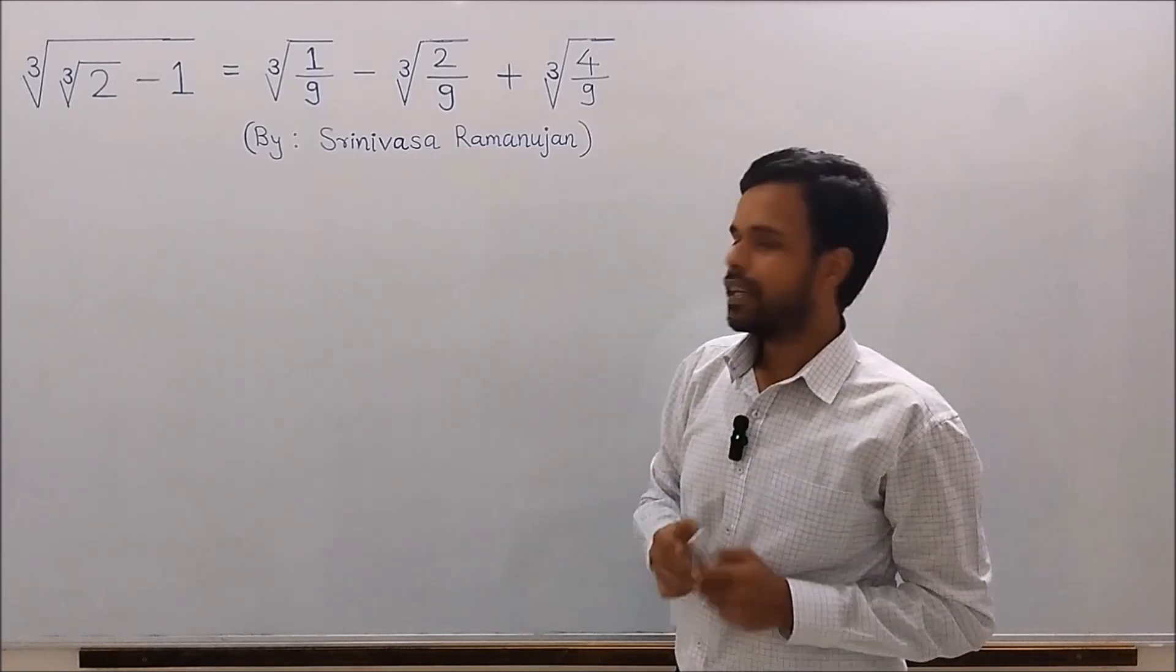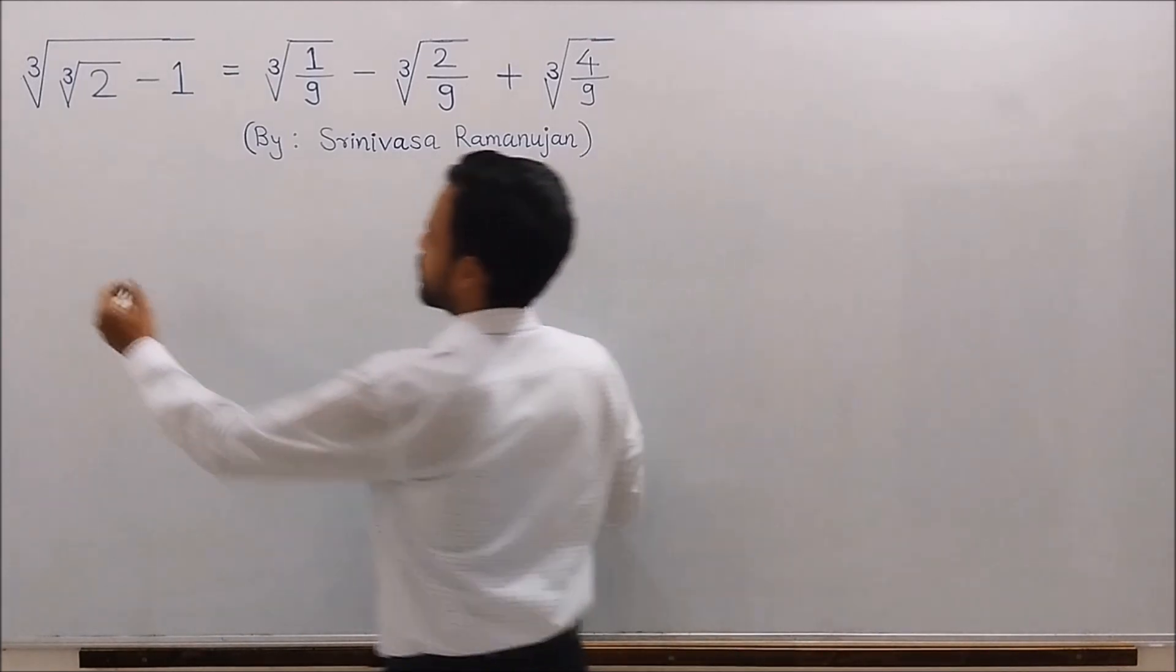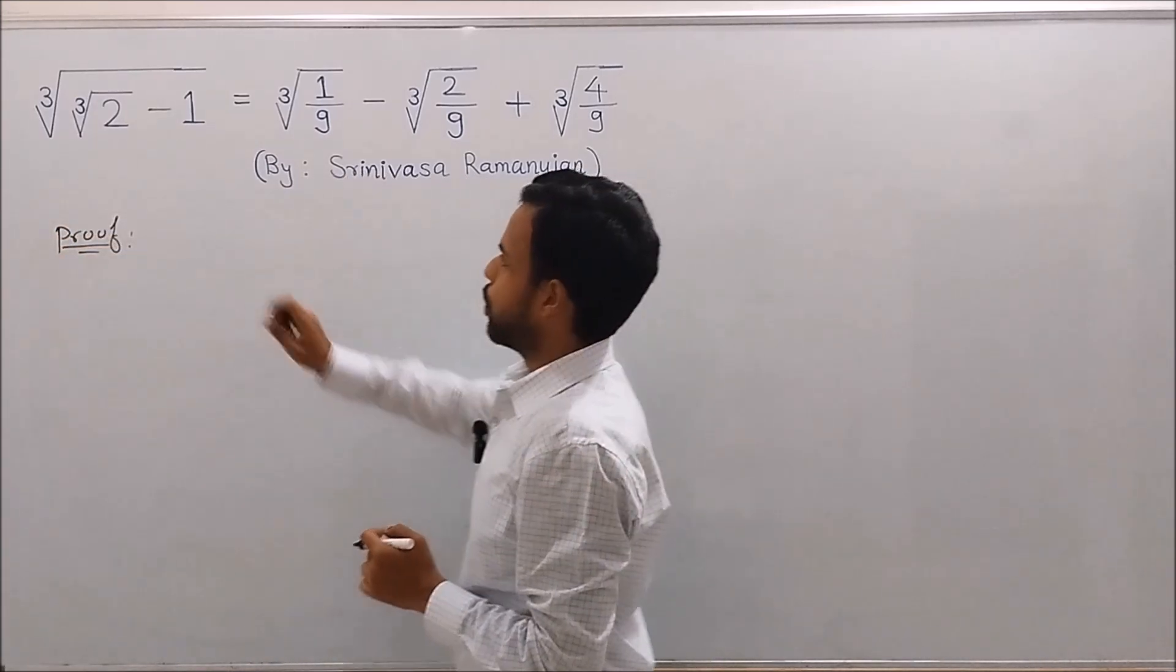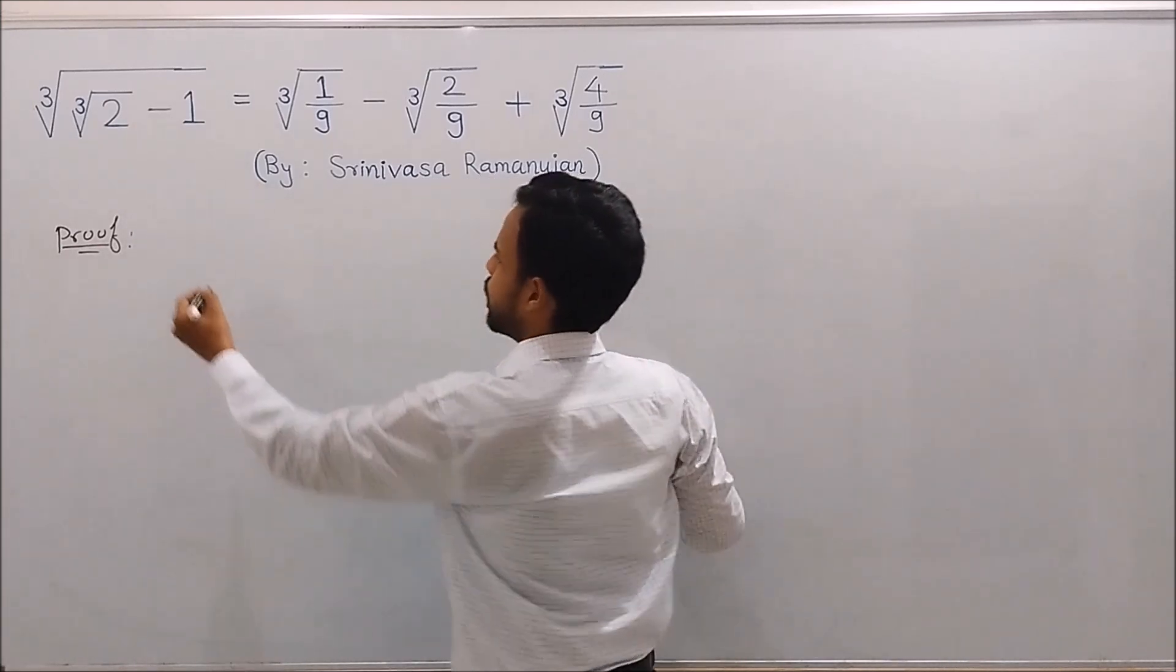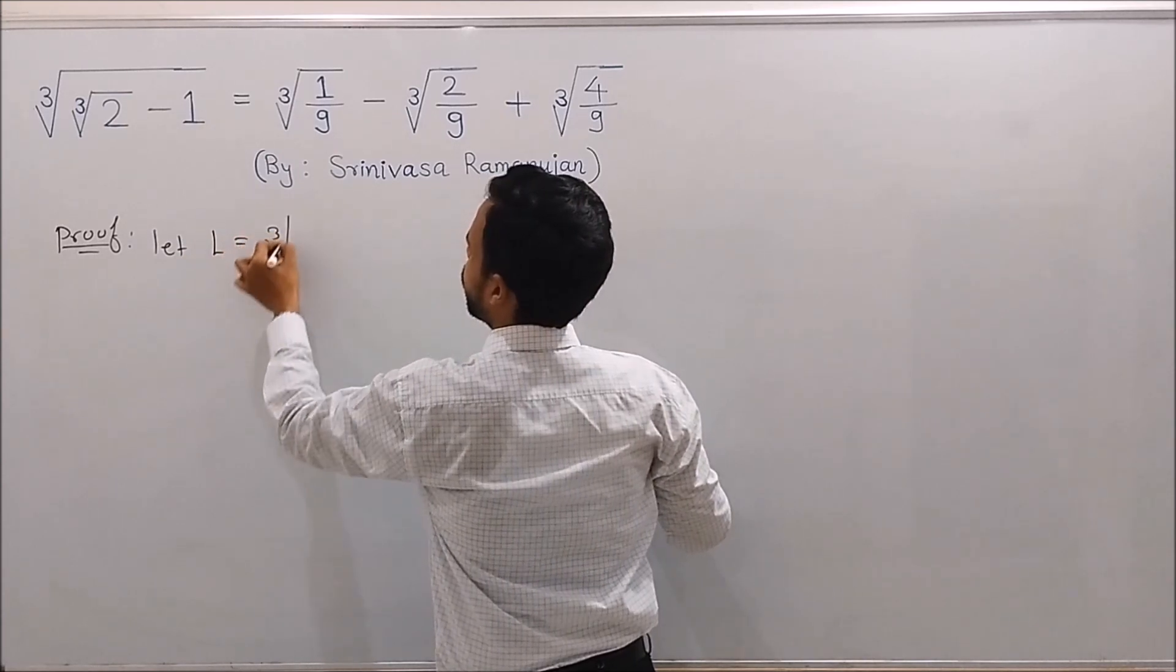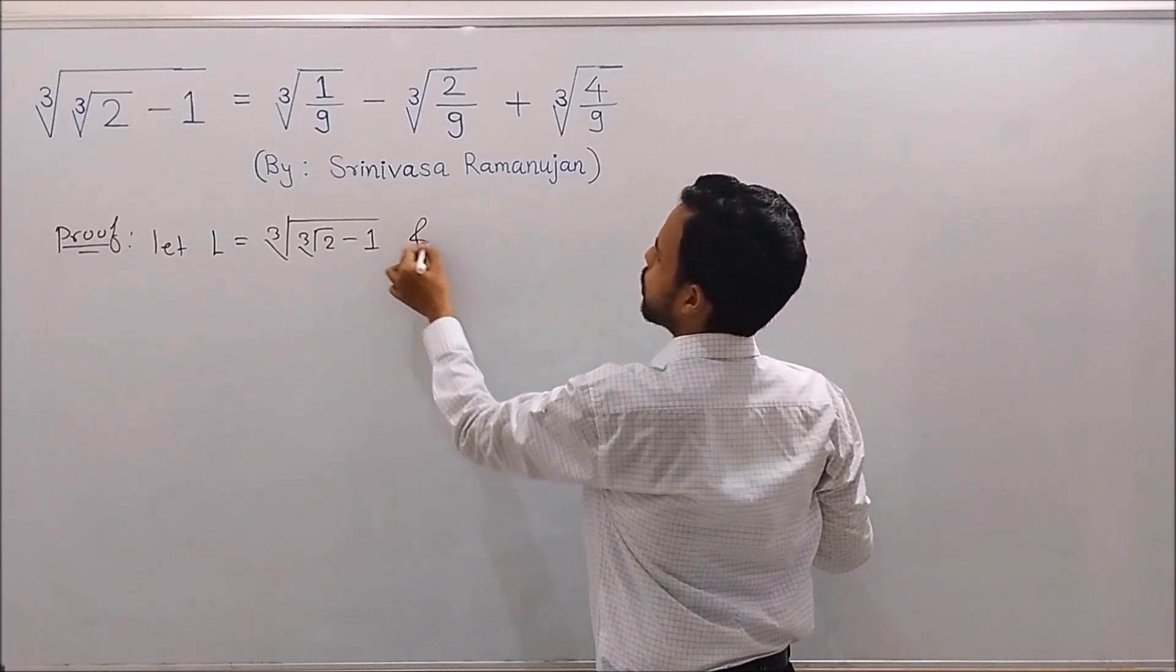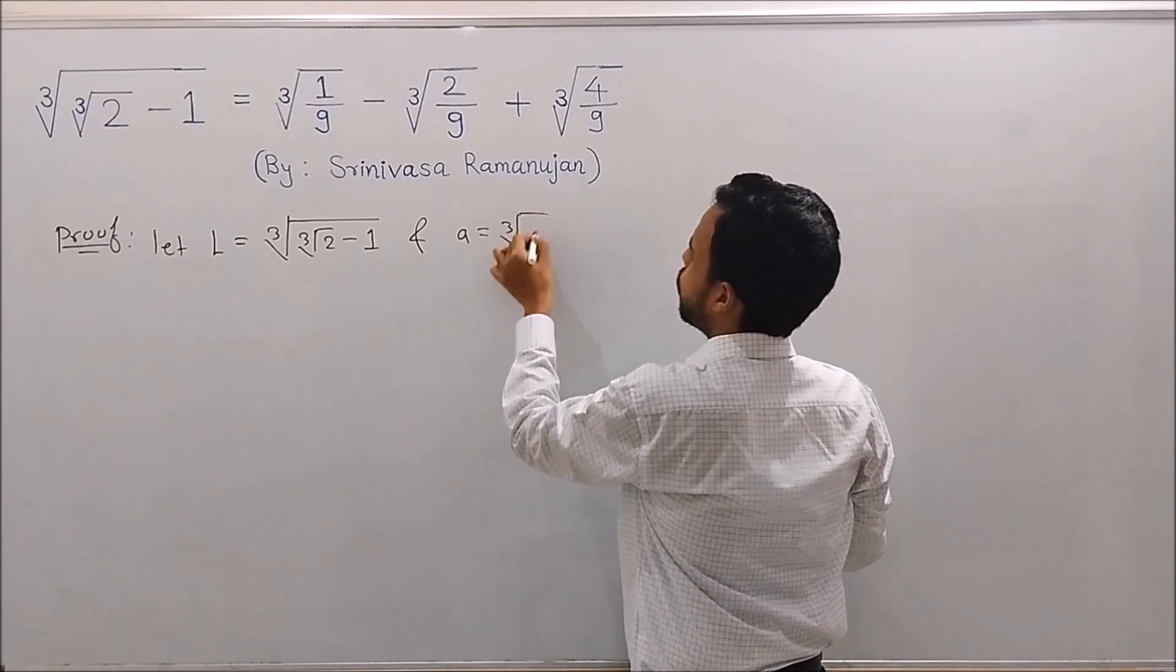So without too much delay, let's begin the proof of this beautiful identity. Let's denote the left-hand side of the identity by L. So let L equals cube root of cube root of 2 minus 1. And let A denote cube root of 2.